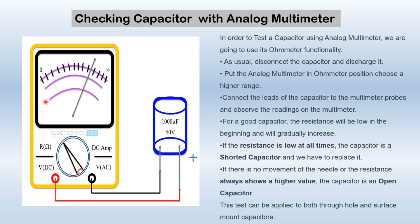Checking a capacitor with an analog multimeter. Connect the red and black probes to the positive and negative terminals of the capacitor respectively. Before connecting, always discharge the capacitor. Set the analog multimeter to the ohms position. For a good capacitor, it will initially show a very low resistance value and then quickly jump to a higher value. If this happens, the capacitor is good. If the resistance stays low all the time, the capacitor is shorted and must be replaced. If there is no movement of the needle or the resistance always shows a very high value, the capacitor is open and needs to be replaced. This test can be applied to both through-hole and surface-mount capacitors.